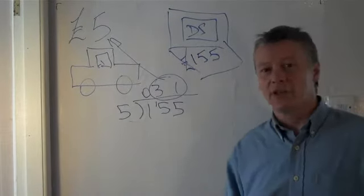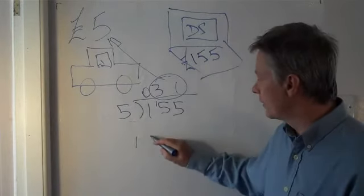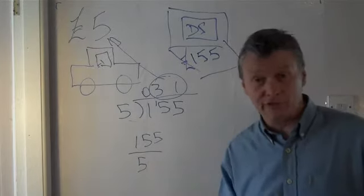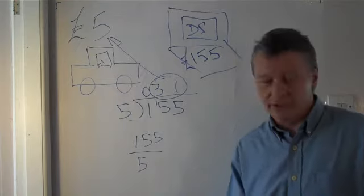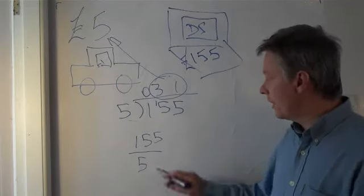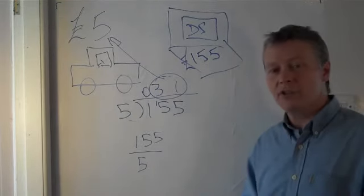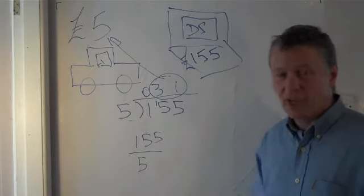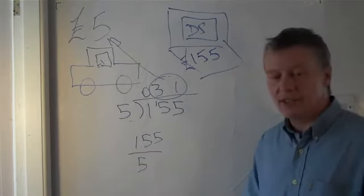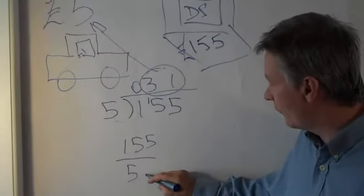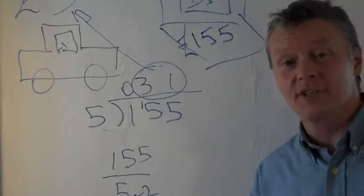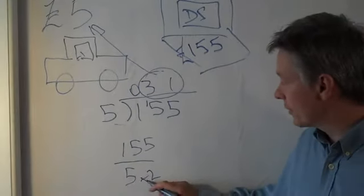But another way you might look at is to write it slightly differently as £155 divided by 5, in other words, a fraction. And if you look at some of the other videos, you can see that with a fraction, whatever you do to the top or above the line, you've got to do to the bottom. And one of the things I can see from that is that if I multiply that 5 to become 10, it's much easier to divide by 10.